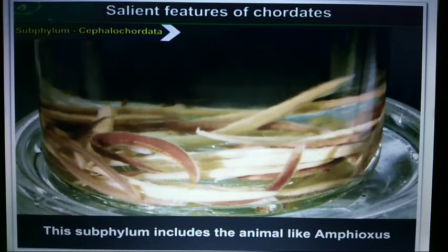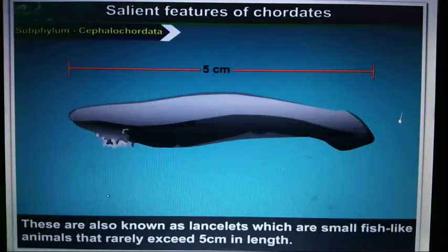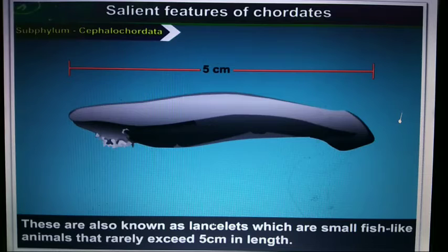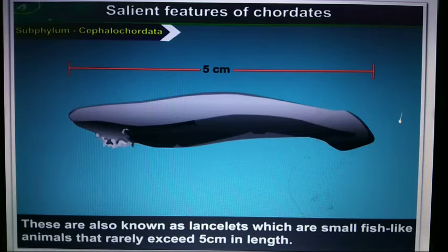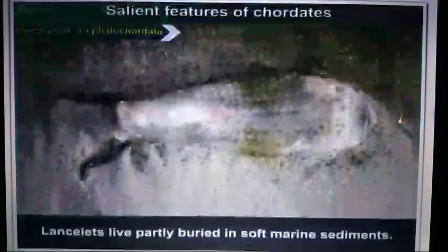The next subphylum of chordata is Cephalochordata. This subphylum includes the animal amphioxus. These are also known as lancelets, which are small fish-like animals that rarely exceed about 5 cm in length.